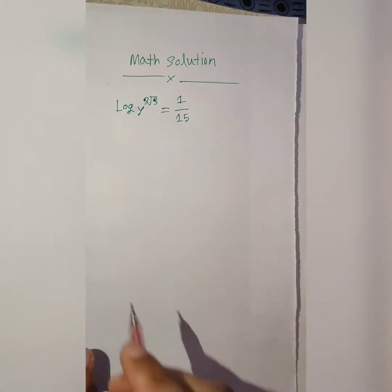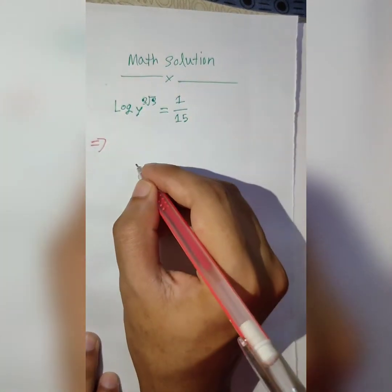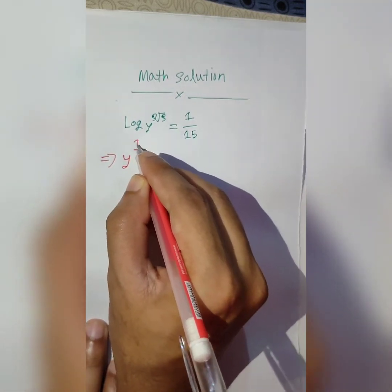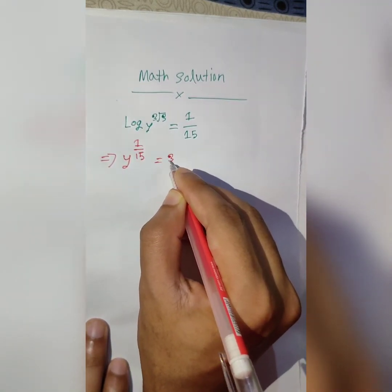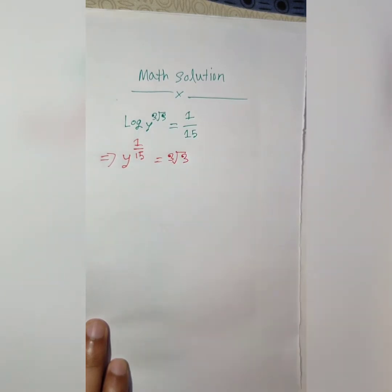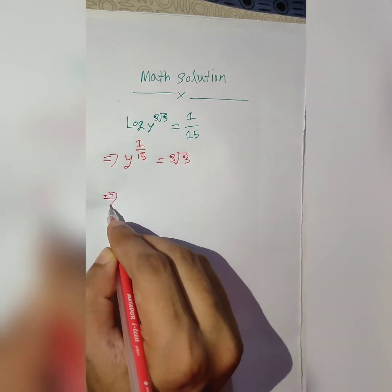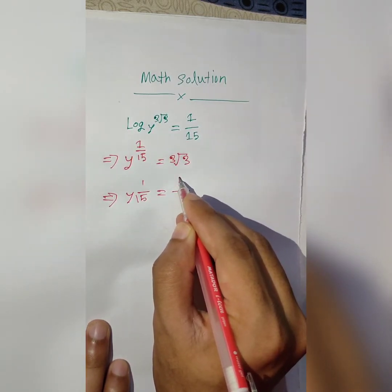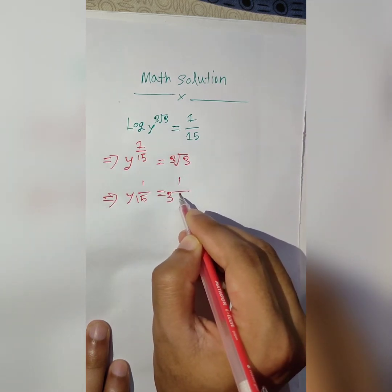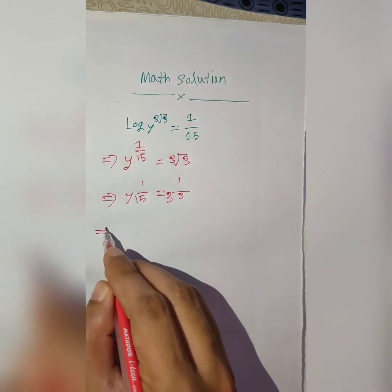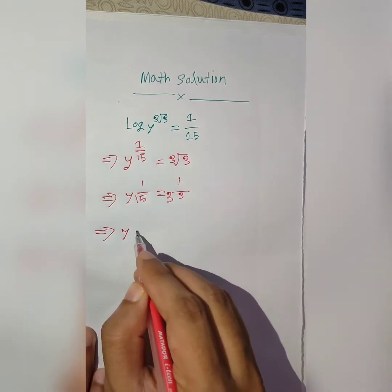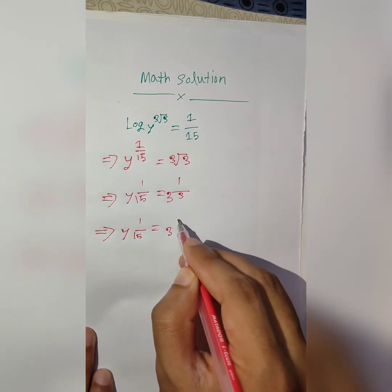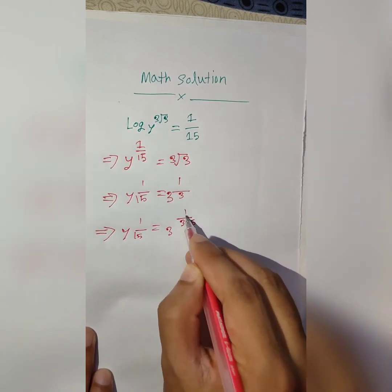1. y × 1^15 equal to 3 root 3. y × 1^15 equal to 3. y: 1 equal to 15 equal to 3 into 5, 1 equal to 5.